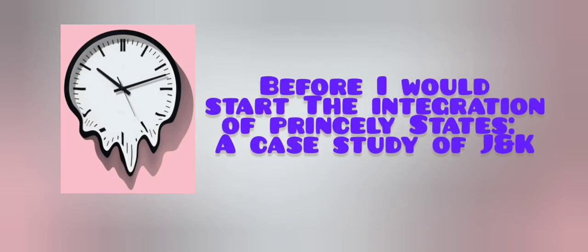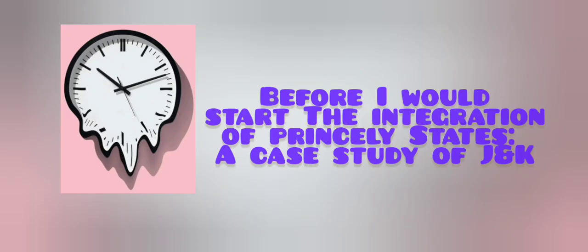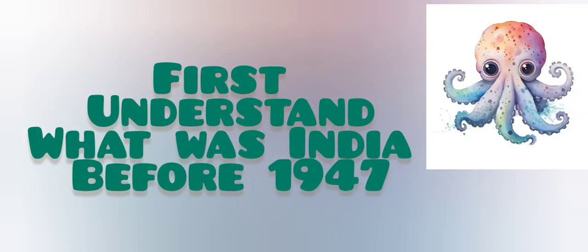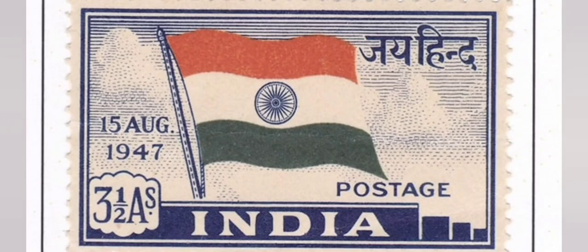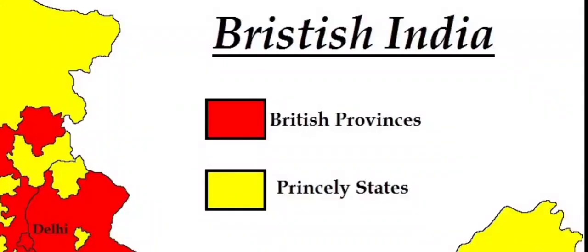Dear students, before I start the chapter, you have to understand how India was in 1947. At the time of Indian independence on 15th August 1947, India was divided into two sets of territories. One set was called British India, and the other set was called Princely India, or princely states.